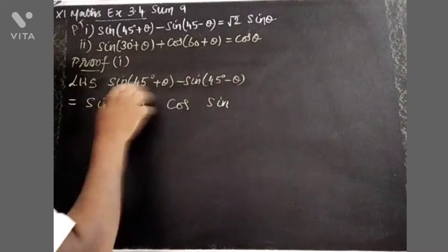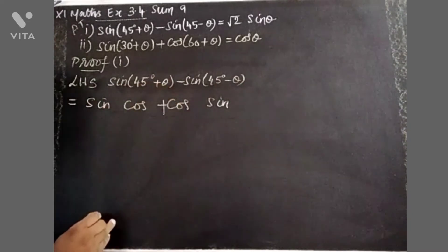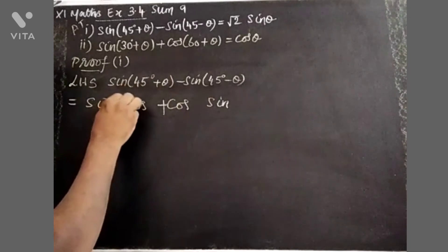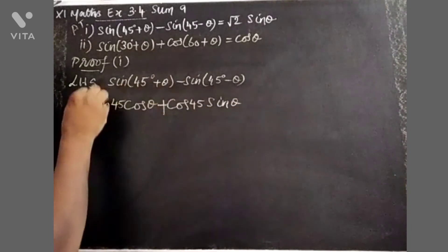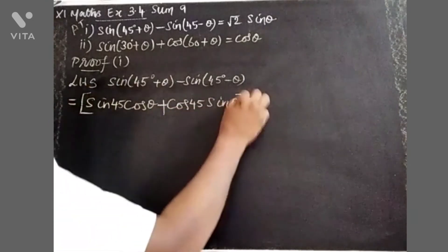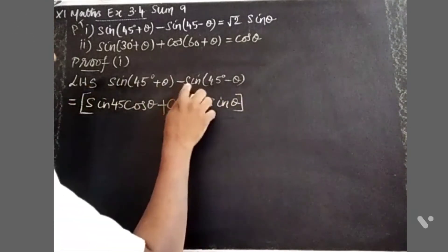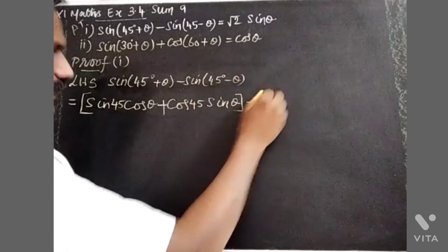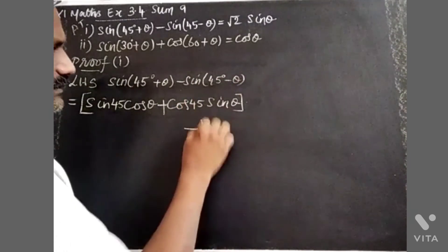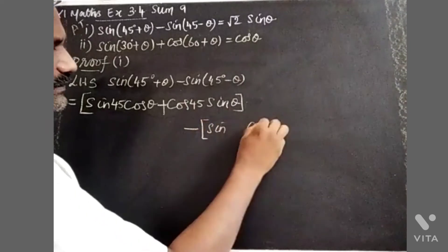Sin is the same. For the first angle and second angle: sin(45+θ) equals sin 45 cos θ plus cos 45 sin θ. And sin(45-θ) equals sin 45 cos θ minus cos 45 sin θ. Again, the pattern is sin cos cos sin.